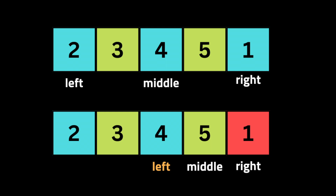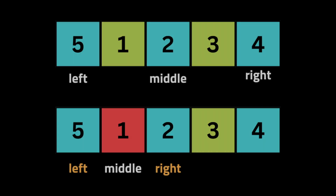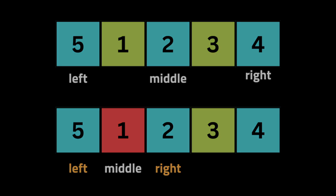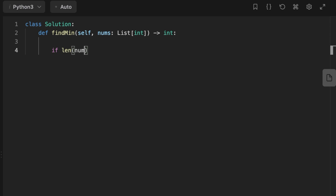If the middle is not at an inflection point, here's what we do: we initialize two pointers — left and right — then calculate the middle. If the number to the left of the middle is smaller than the middle number, we move the left pointer to the middle. Otherwise, if the middle is less than the left, we move the right pointer to the middle. We repeat until we find the minimum.